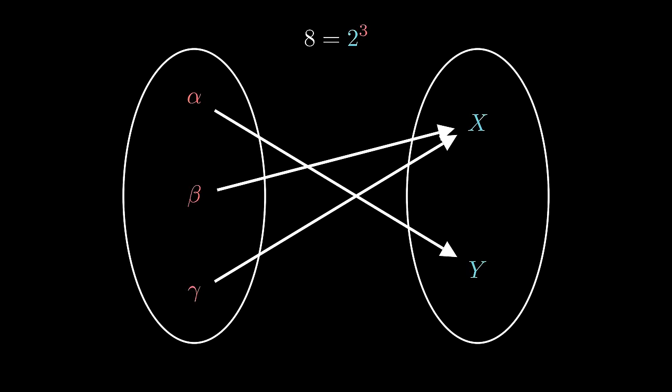Therefore, it's 2 times 2 times 2, 8. 3 is the number of elements in the domain and 2 is the number of elements in the codomain.